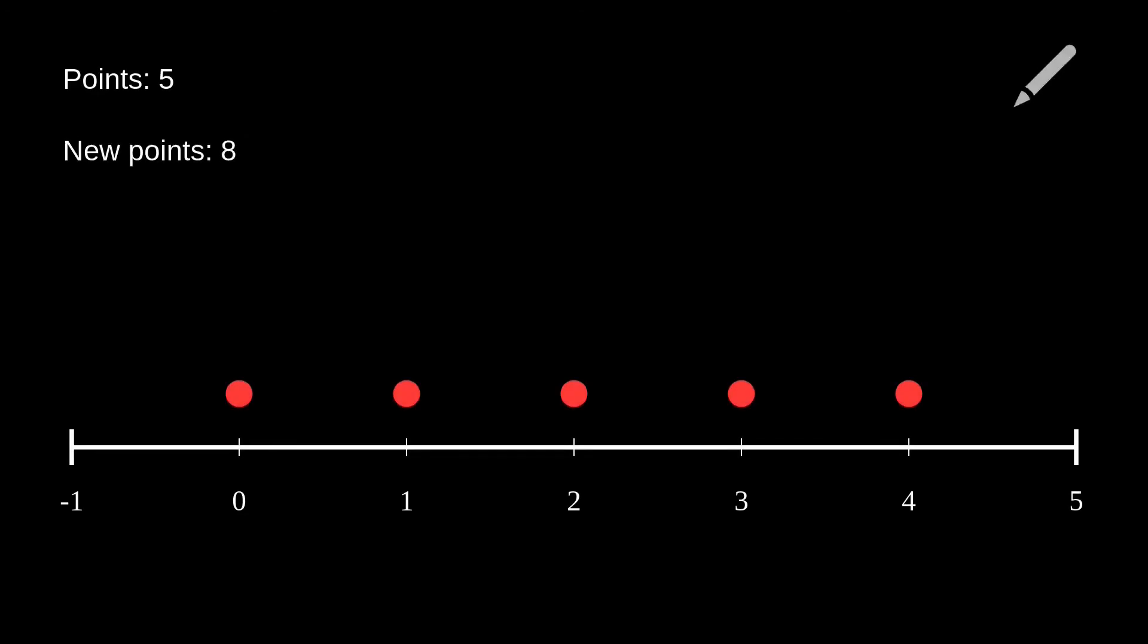Resampling a data set means creating a new version of the data with fewer points. For example, suppose I want to resample these five points as eight points. What we do is simply change the step size to five-eighths.